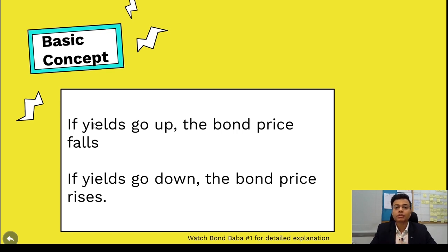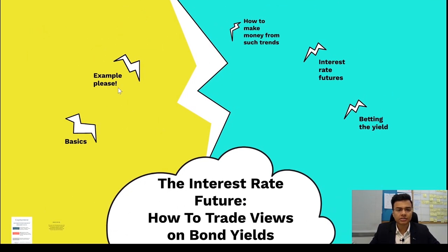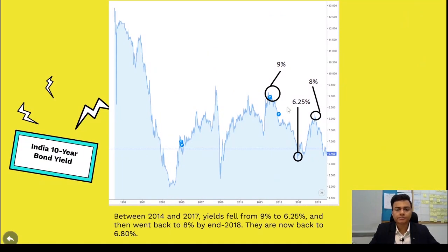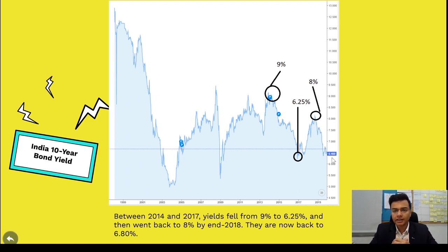If you need a detailed explanation, please watch Bond Baba video 1. Looking at India's 10-year sovereign bond yield: in 2014 it was at 9%, by 2017 it had fallen to 6.25%, then by 2018 it rose back to 8%, and now it's at around 6.8%. The basic idea is: can we make money out of this trend? When bond yields go down, bond prices go up, so someone holding a 9% coupon bond when yields fell to 6.25% would have seen their bond price rise.